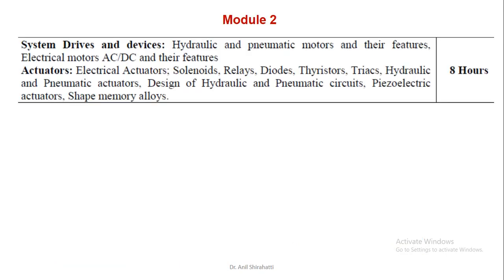In the last class, we saw hydraulic actuators or hydraulic cylinders. We saw four types of cylinders — linear acting: single cylinder, double cylinder, telescopic cylinder, and tandem cylinder.